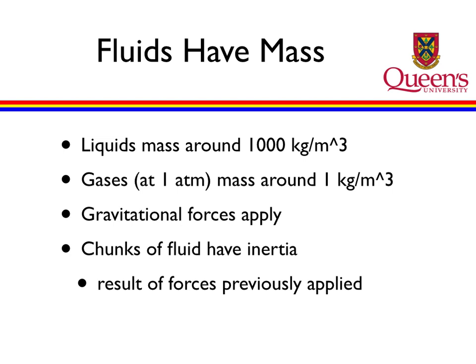The first thing to know about fluids is that fluids have mass. Liquids have a mass of about a thousand kilograms per cubic meter. It's important that we keep track of when we're talking about mass versus weight, because we're really interested in mass in kilograms, not weight in newtons. Gases at one atmosphere pressure have a mass of around one kilogram per cubic meter. The air we're sitting in right now is probably about 1.2 kilograms per cubic meter, so there's a difference of about 800 in the density of these fluids.